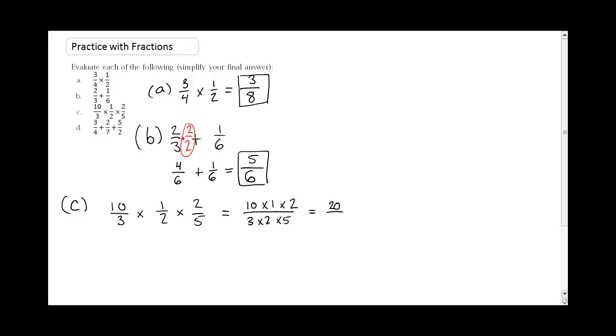3 times 2 is 6 times 5, 30. I can reduce or simplify that. I can take and divide both numbers divided by 10. So why don't I show that? So take both of those, divide by 10, and I get 2 and 3, and now it's simplified.